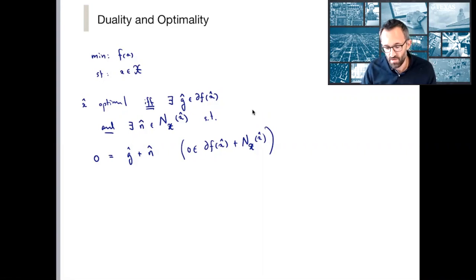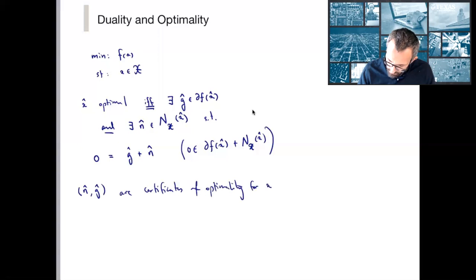Similarly, I could write that x-hat is optimal if there exists, or sorry, so the solution to minimize f(x) such that x is in X is that x which satisfies f(x) less than or equal to f(y) for every other y. I could write it in terms of searching for x. But here, this optimality condition, I've written it in terms of a search over the subdifferential and the normal cone. So the key point here is that this pair, n-hat and g-hat, are certificates of optimality for x-hat.